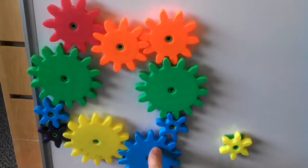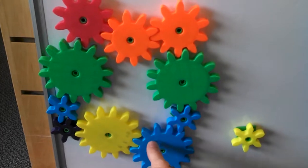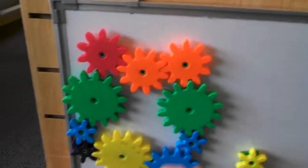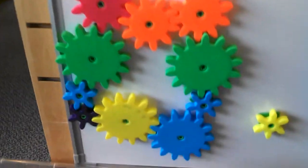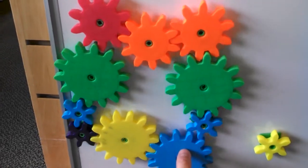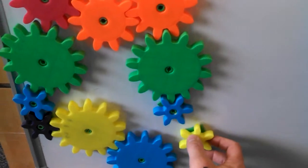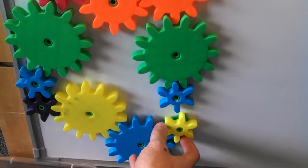All right, so as we can see, everything turns in unison. This circuit and this circuit are joined by this gear, so as we rotate, everything spins together. But as soon as we introduce this, let's see if I can do this with one hand...